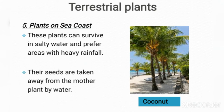These plants can survive in salty water. Unlike normal plants, they prefer salty water and also prefer areas with heavy rainfall. The coconut plant needs a lot of water to grow, so it favors areas with heavy rainfall. Their seeds are taken away from the mother plant by water — this is a form of dispersal we will learn about in higher classes.